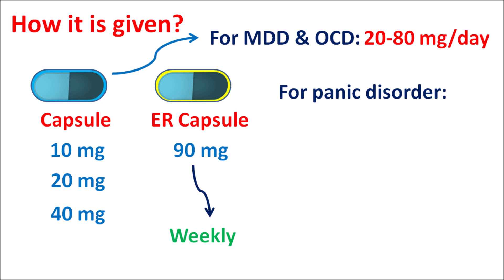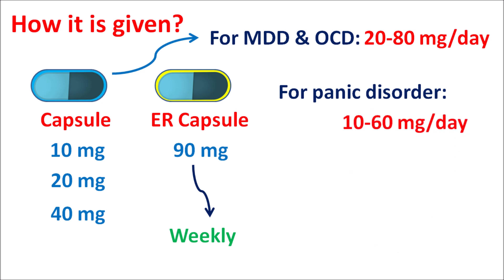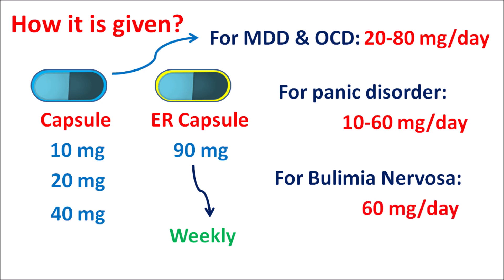For panic disorders, the dose ranges from 10 to 60 mg per day, with an initial dose of 10 mg and a maximum of 60 mg per day. For bulimia nervosa, this drug is given at 60 mg per day, initially started at a high dose to control neural activity and reduce excessive eating.